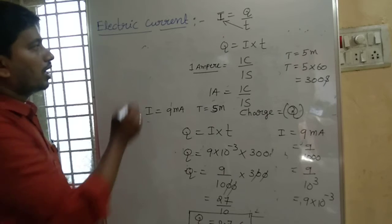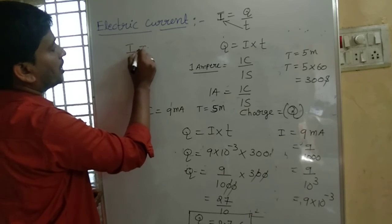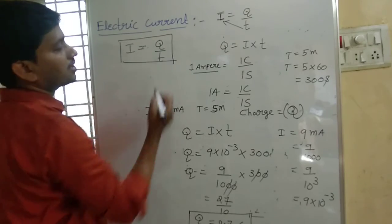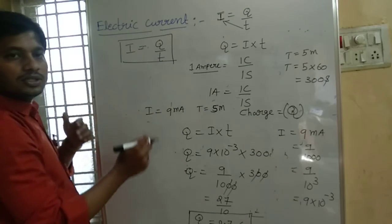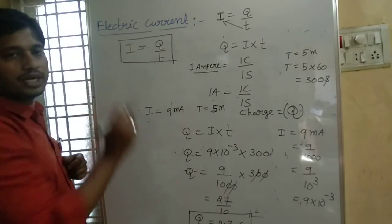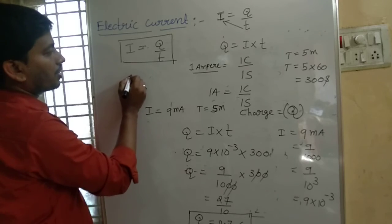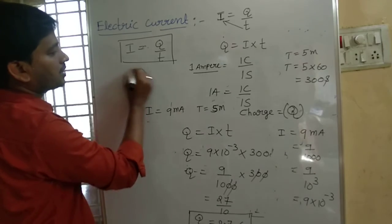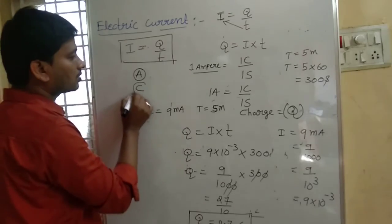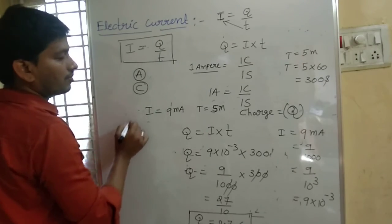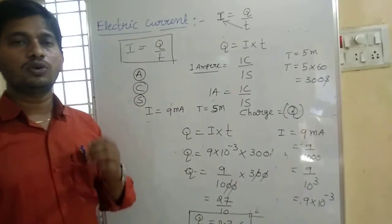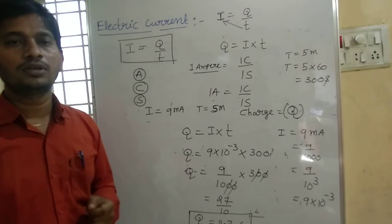Based on electric current, you have to remember: electric current is nothing but rate of flow of charges — how many electrons pass through a cross section of a conductor per unit time. The SI unit of current is Ampere, SI unit of charge is Coulombs, SI unit of time is seconds. Electric current is a scalar quantity. I hope you all understood today's session. Thank you.